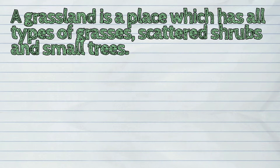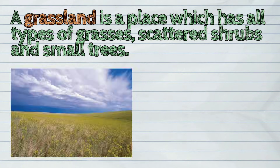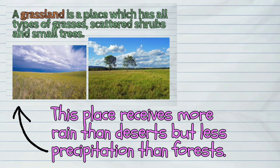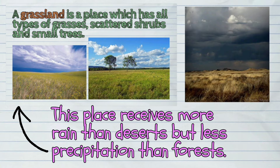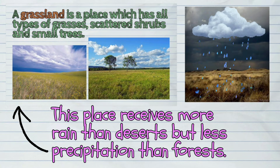A grassland is a place which has all types of grasses, scattered shrubs, and small trees. This place receives more rain than deserts, but less precipitation than forests.